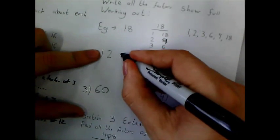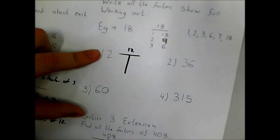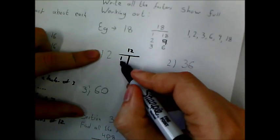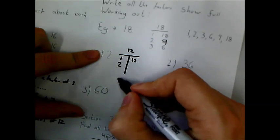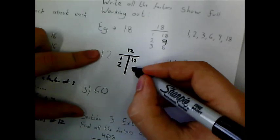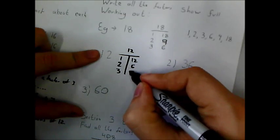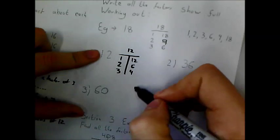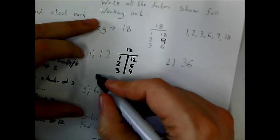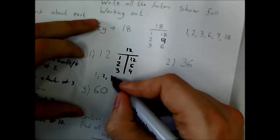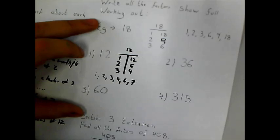For 12, I'm going to write a 12 here and do a little t here. I always start with 1, and 1 times 12 gives me 12. So these are factors. And I'm going to move on to 2. 2 times something gives me 12. That is 6. I'm going to move on to 3. 3 times 4 is 12. So now I've found all of them. My factors of 12 are 1, 2, 3, 4, 6, and 12.